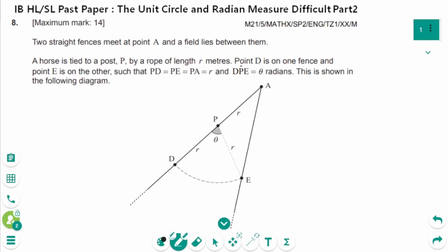This video will cover difficult Part 2 questions regarding the topic of the unit circle and radian measure. This is a question from the May 2021 AASL paper 2.